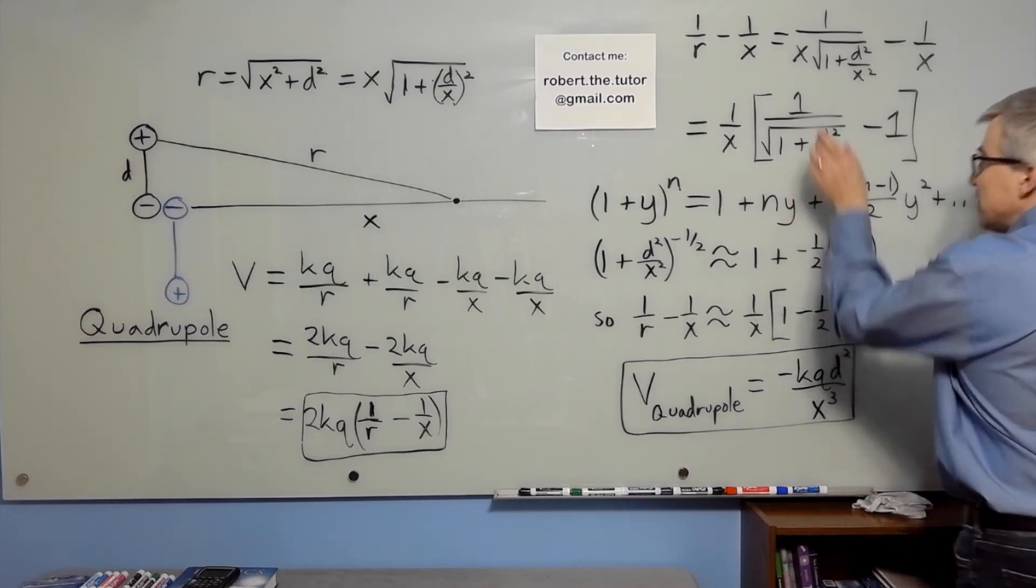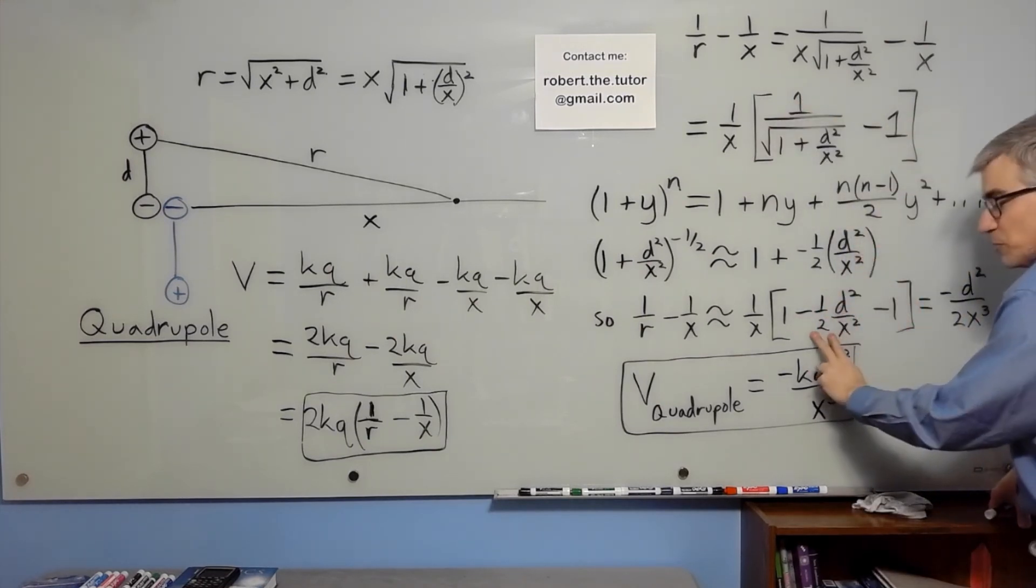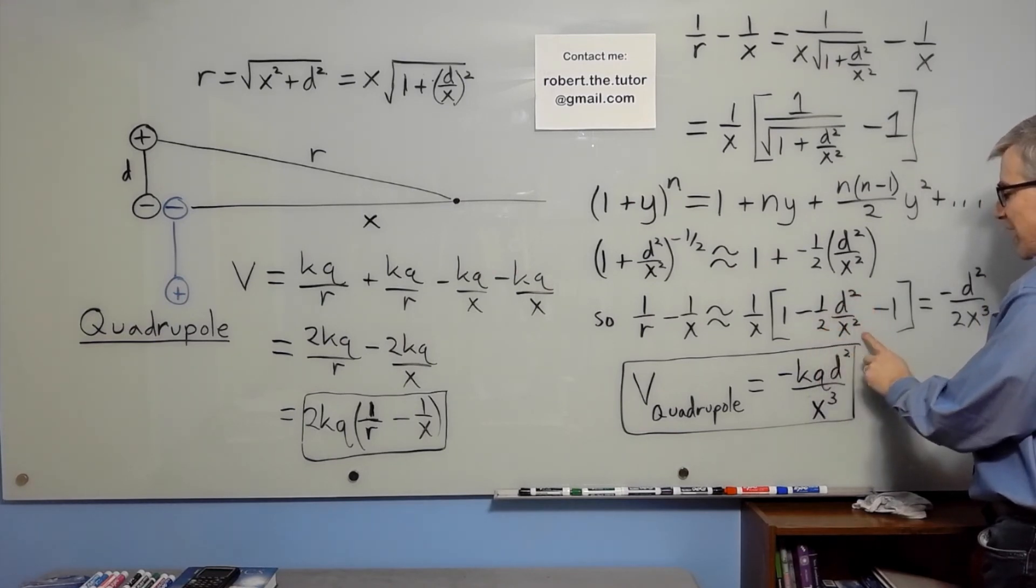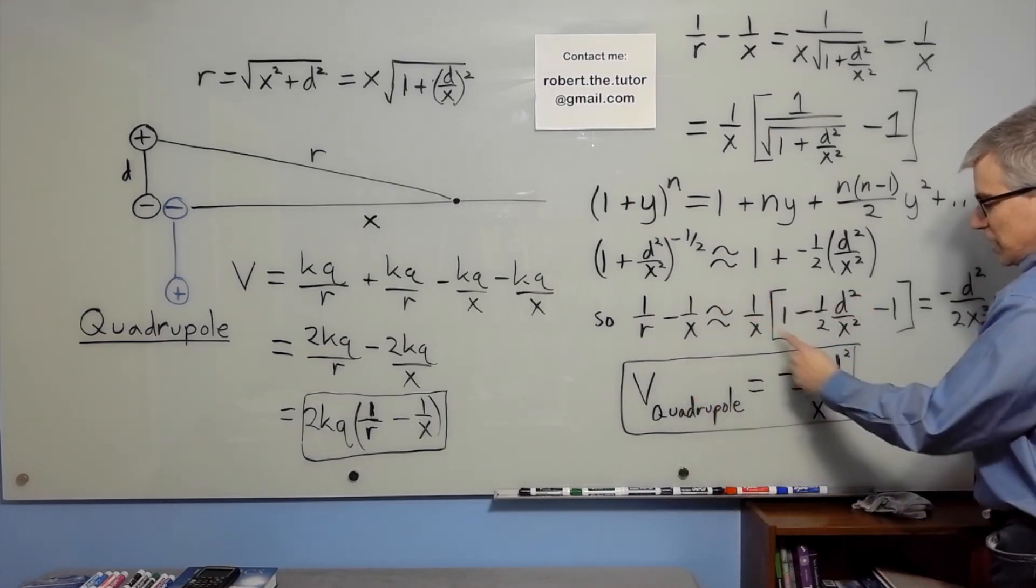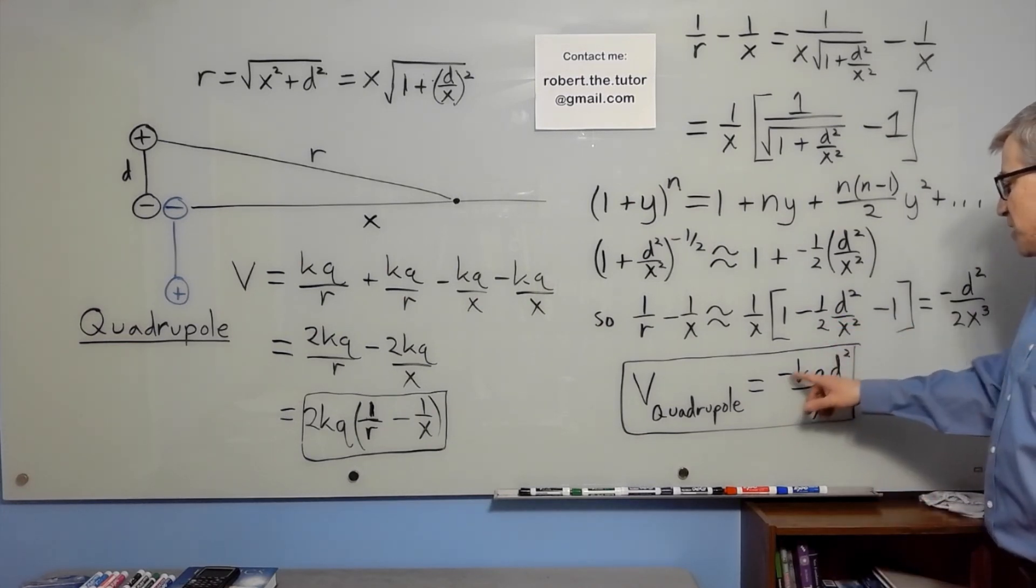So if we put that there, the ones cancel out, but we are left with something that isn't a zero. We have negative d squared over 2x. And when we multiply by 2kq, we get the voltage of this quadrupole is minus kq d squared over x cubed.